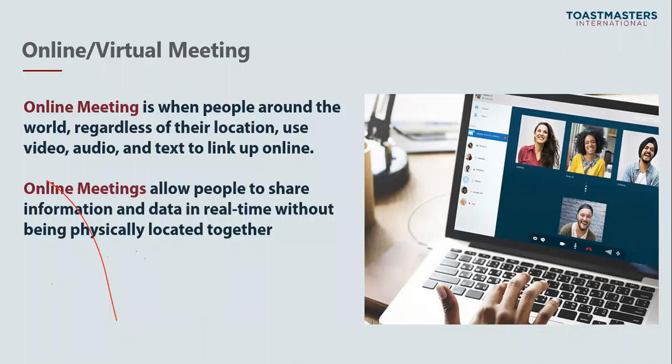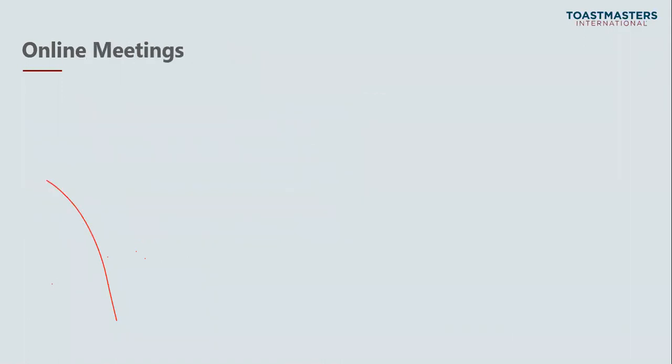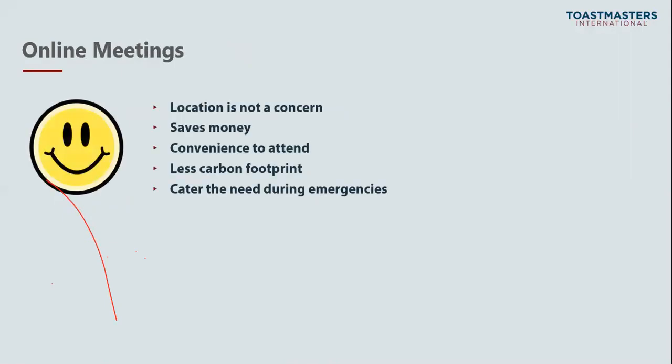What we are doing today is an example of such online meetings. Online meetings have their own benefits and disadvantages. One important benefit is that location is never a concern — no matter where you are, you can still connect and have a meeting. It saves a good amount of money compared to organizing a physical meeting, and it is convenient for members to attend, whether you are in the office or at home. It also helps reduce the carbon footprint.